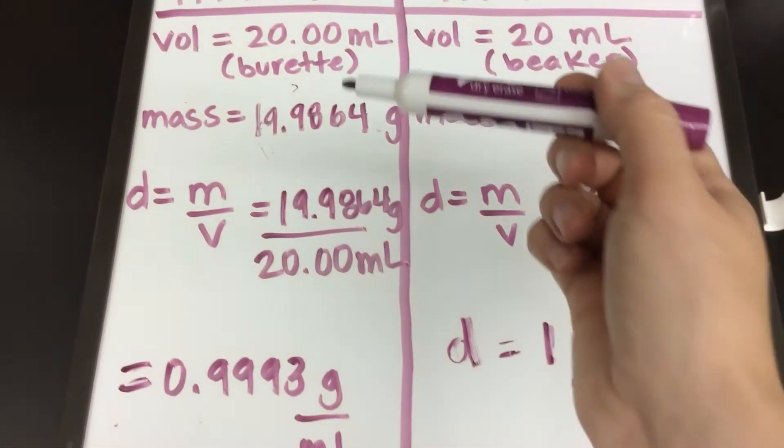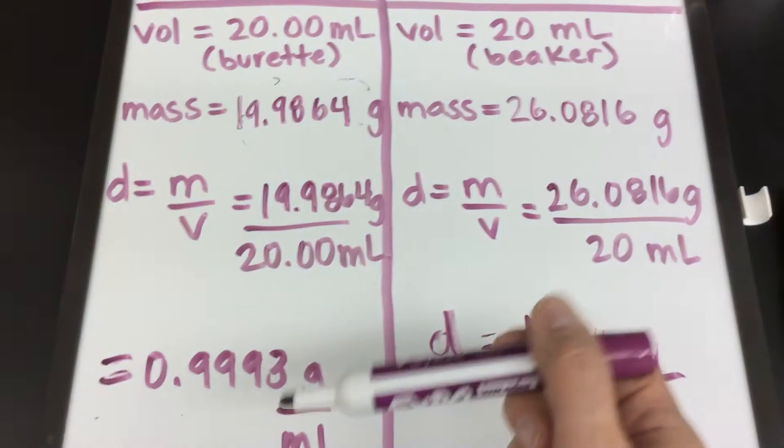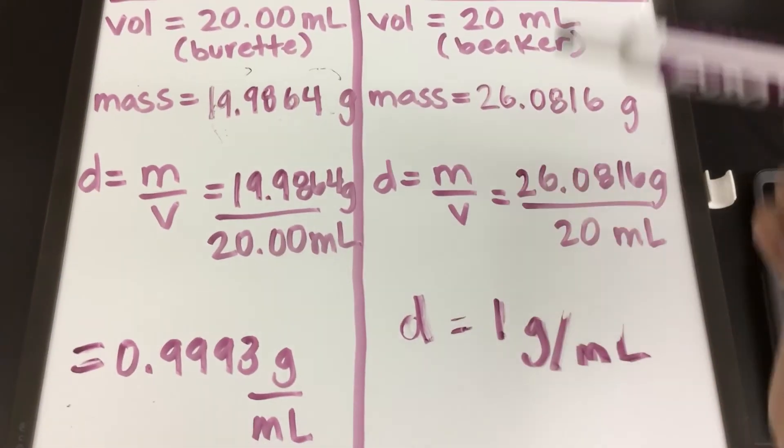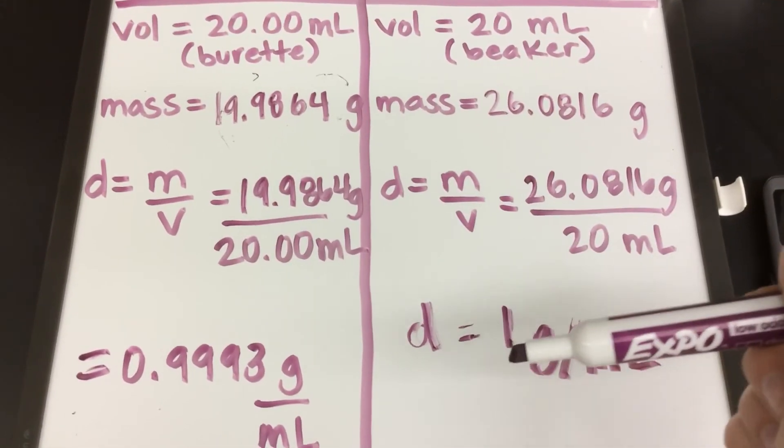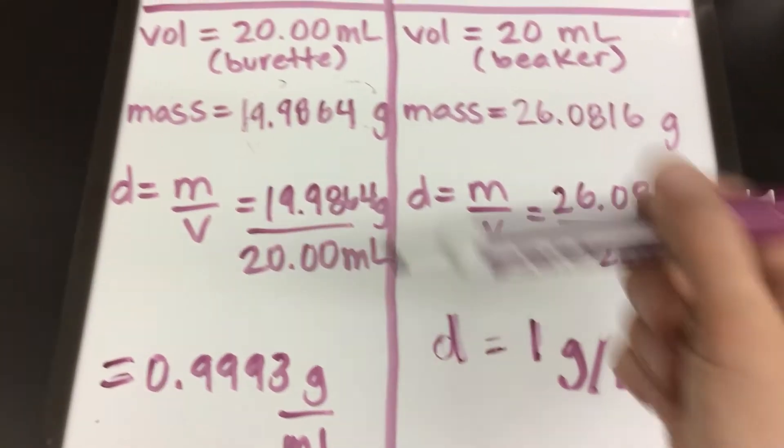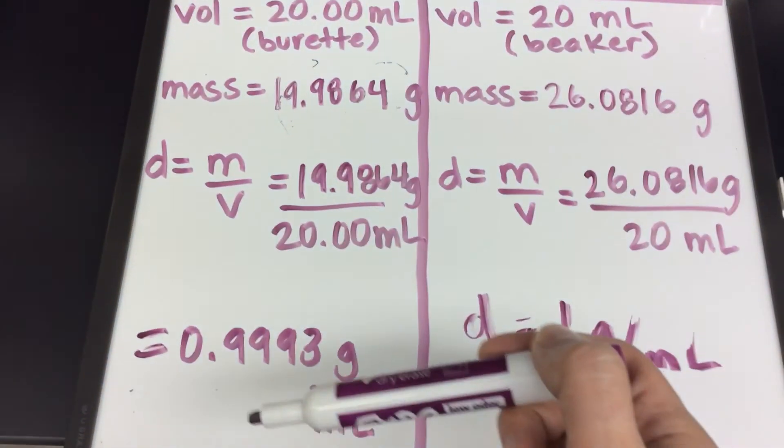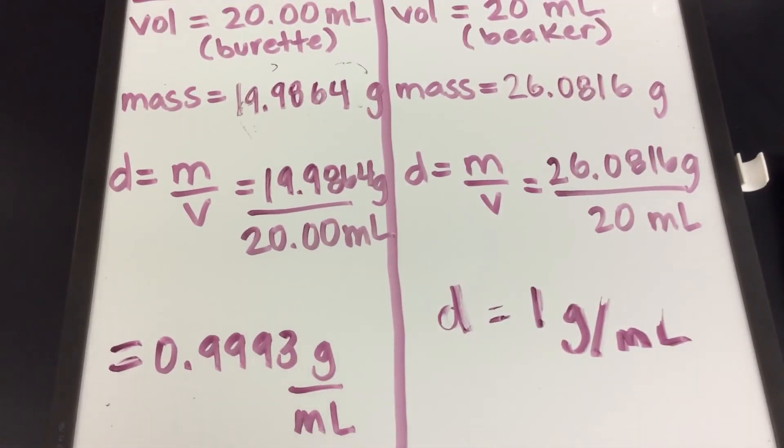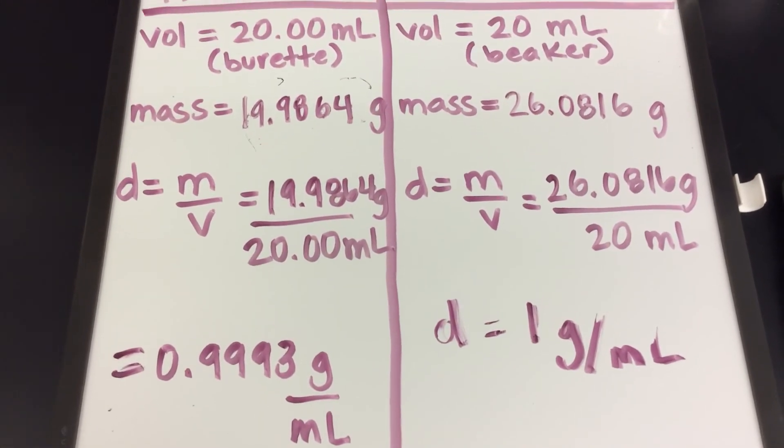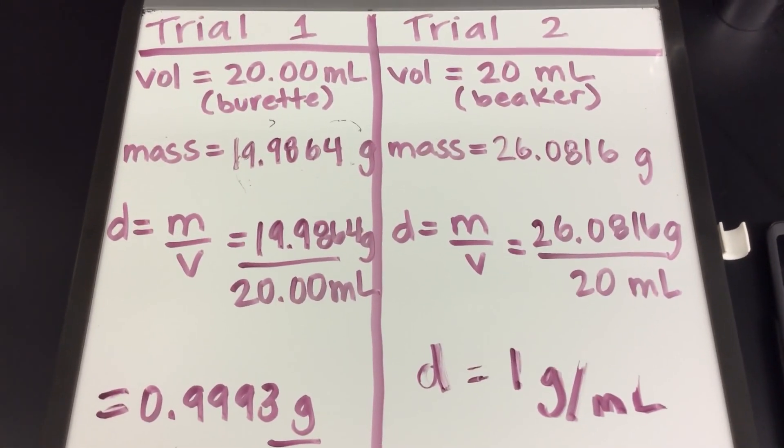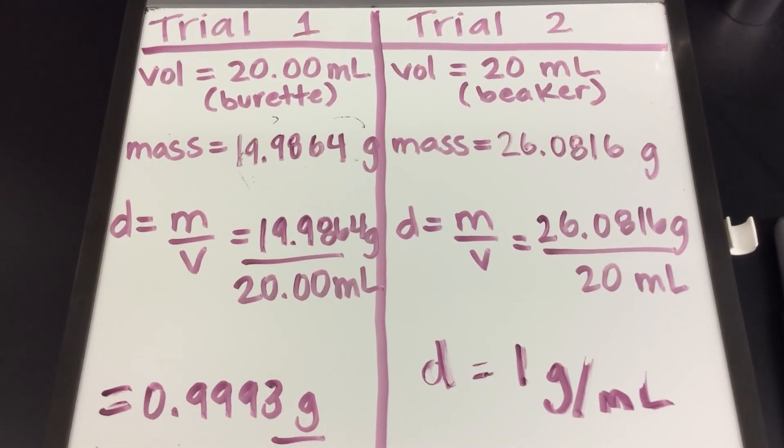In terms of based on the data I had available to me. These data gave me a measurement that only had one sig fig, whereas these data gave me a measurement with four significant figures. I hope this example helps you understand why we use significant figures and how those significant figures translate into our calculations.